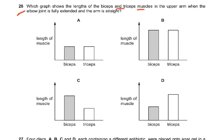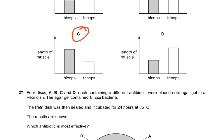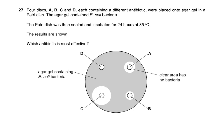Question 26: Which graph shows the length of the biceps and triceps muscle in the upper arm when the elbow joint is fully extended and the arm is straight? When you extend your arm the triceps contracts and the biceps relax so the biceps have more length. The answer is C. I think this has been removed from the syllabus so we don't need to do it.